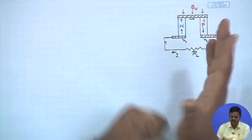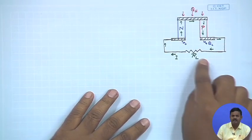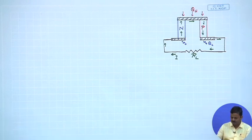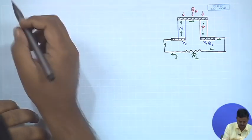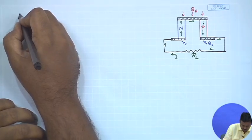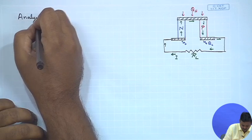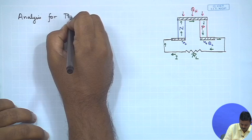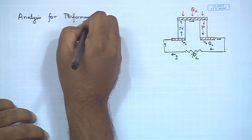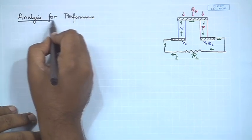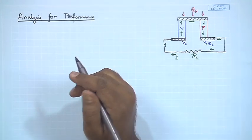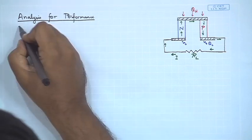Let us look into this. We will take just a single pair of n and p type and try to analyze this configuration. We will do a little bit of analysis for performance. What we will do is start with an energy balance.